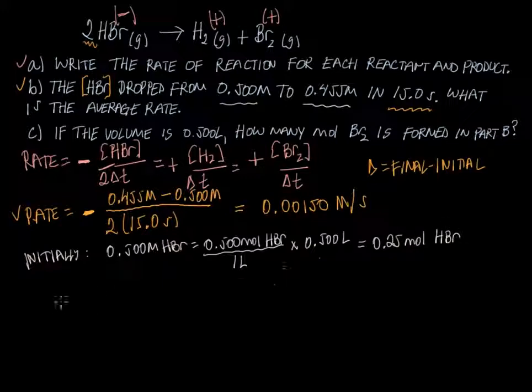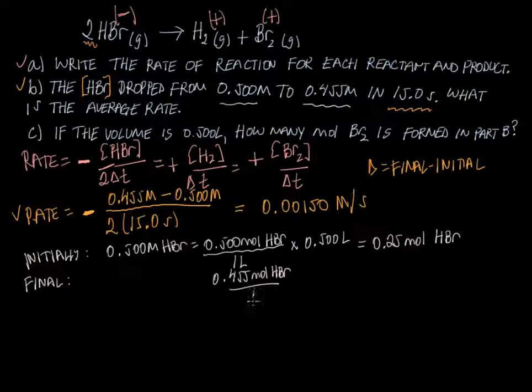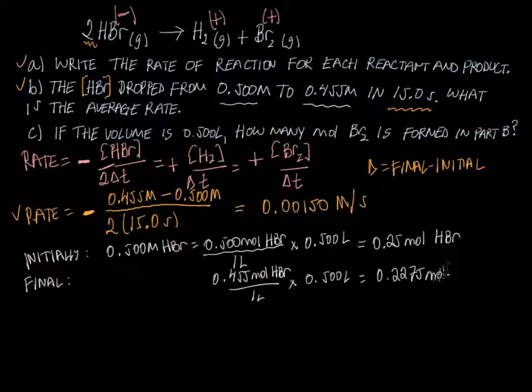That's initially. Now after the 15 seconds, let's go ahead and calculate what our final moles of HBr is. So we have 0.455 moles of HBr per liter. The reaction chamber is still 0.5 liters, so we can multiply those out on our calculator, and we have a value of 0.2275 moles of HBr. We'll round this off here at the end.